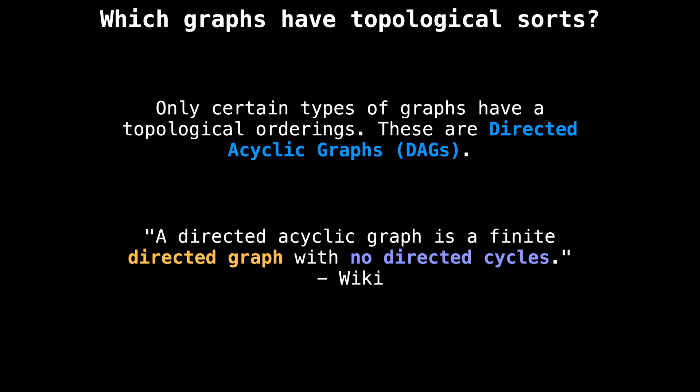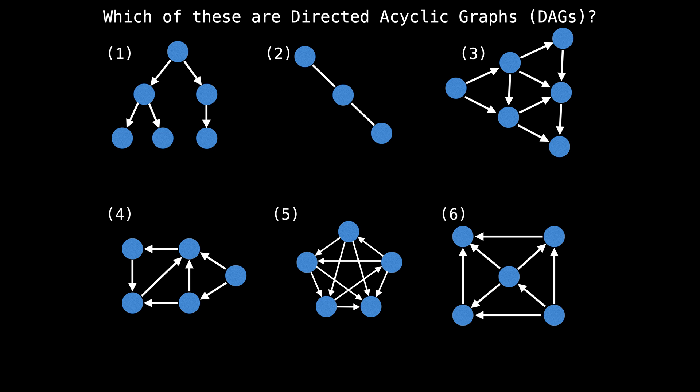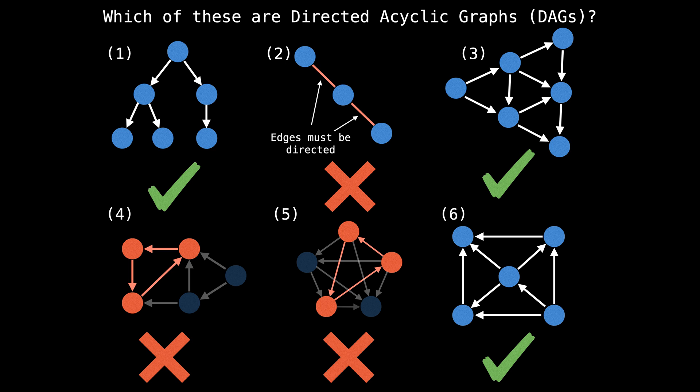A directed acyclic graph is a directed graph with no directed cycles. I took the time to draw a few graphs on this slide. Pause the video and take a moment to determine which of these graphs are directed acyclic graphs and which ones are not. Graph one, three, and six all have directed edges and no cycles, hence they're all directed acyclic graphs.